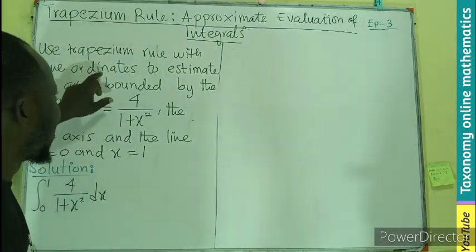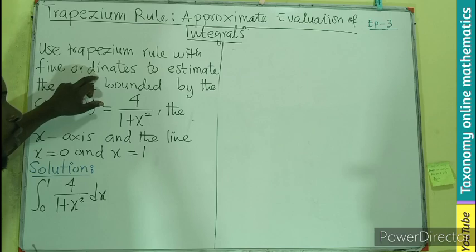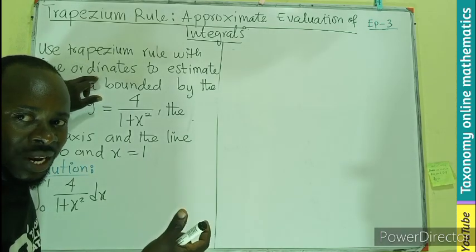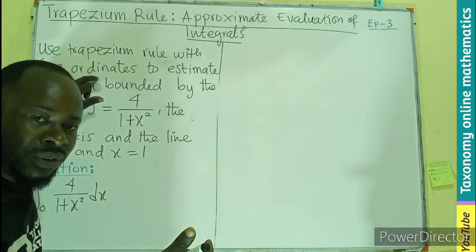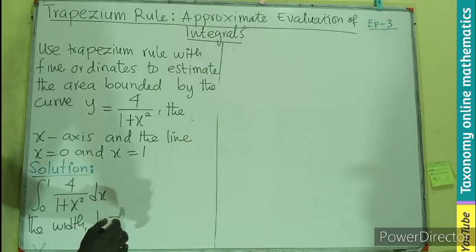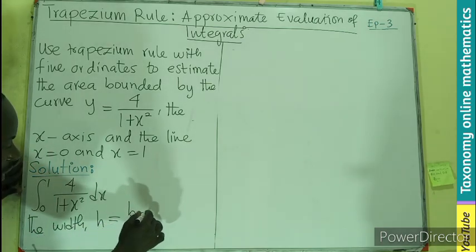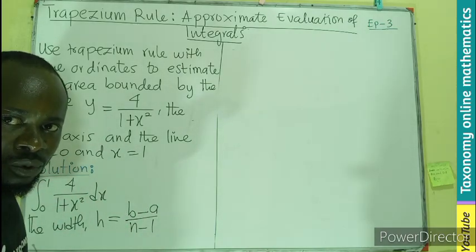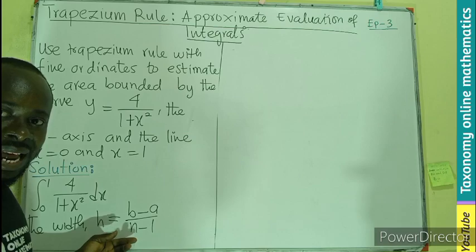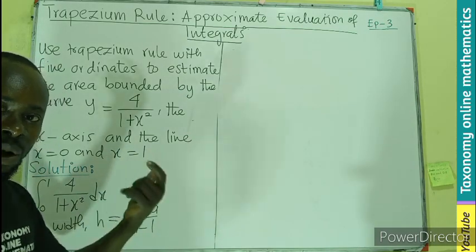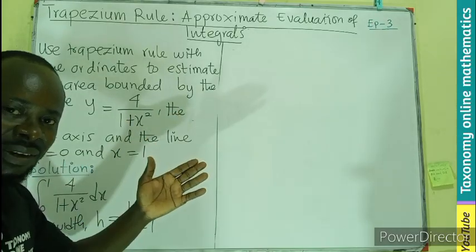Remember in the tutorial we mentioned that they don't mention sub-intervals, so the width h is going to be (b - a)/(n - 1). We divide by n - 1 because they don't mention the number of strips or sub-intervals, but rather they gave us the number of ordinates.